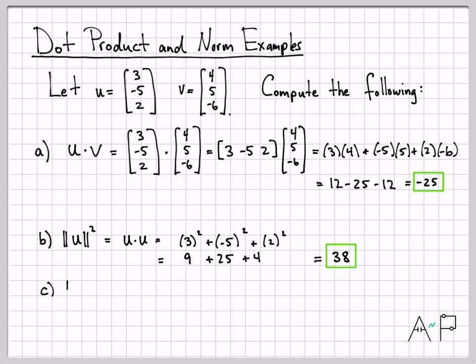Let's compute the norm squared of v. Very similar thing. The norm squared of v is v dot v, which is v transpose v, which is just each coordinate of v times itself. So that is 4 squared plus 5 squared plus a negative 6 squared, which is 16 plus 25 plus 36. If we add all that up, we get 77.